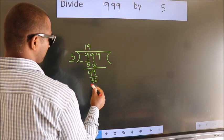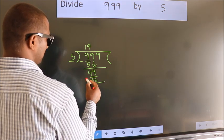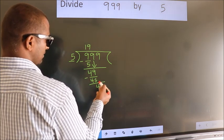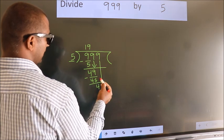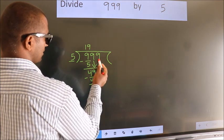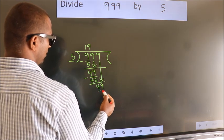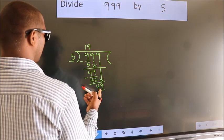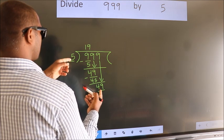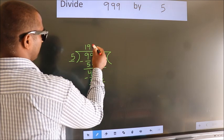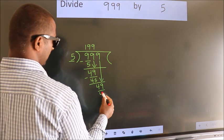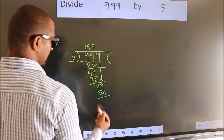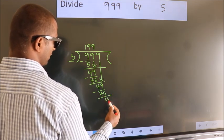We subtract: 49 minus 45 gives us 4. We then bring down the next digit — 9 comes down again, making 49. A number close to 49 in the five times table is 45 — five nines are 45. We subtract and get 4.